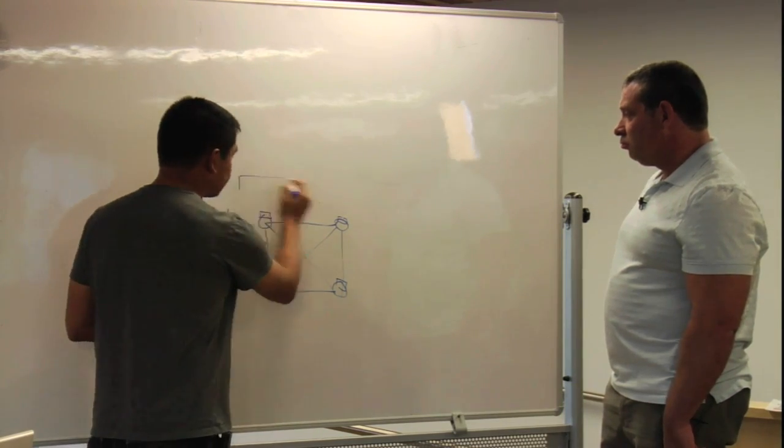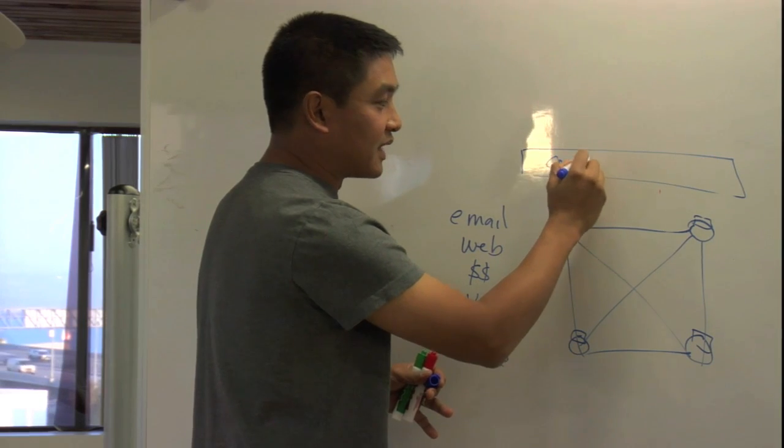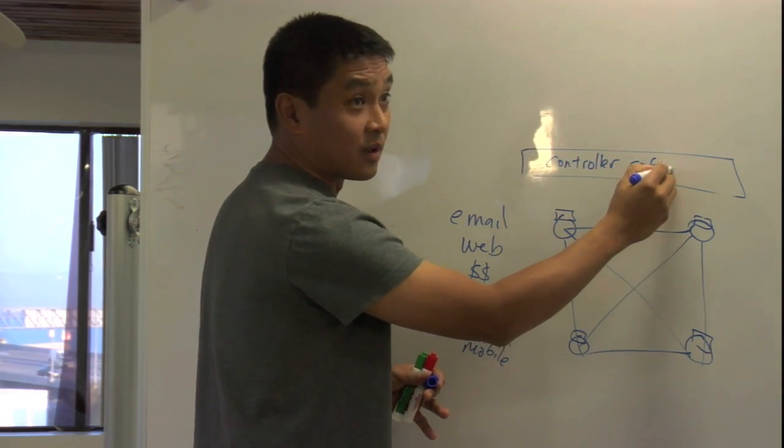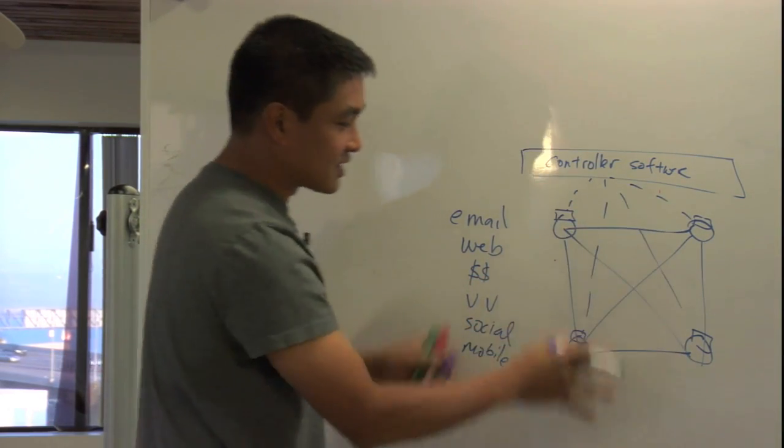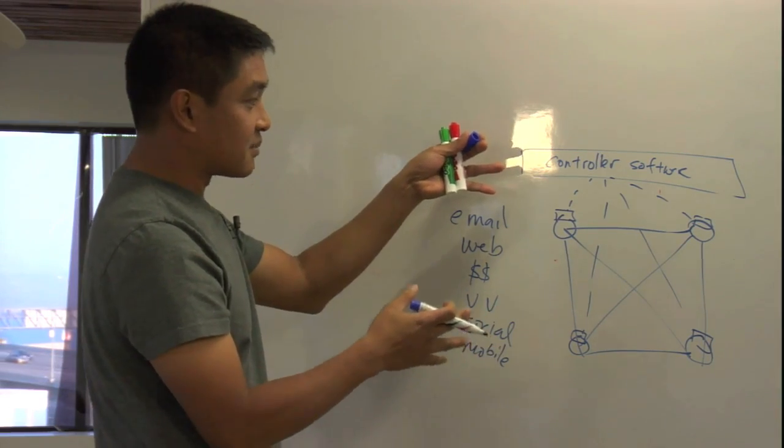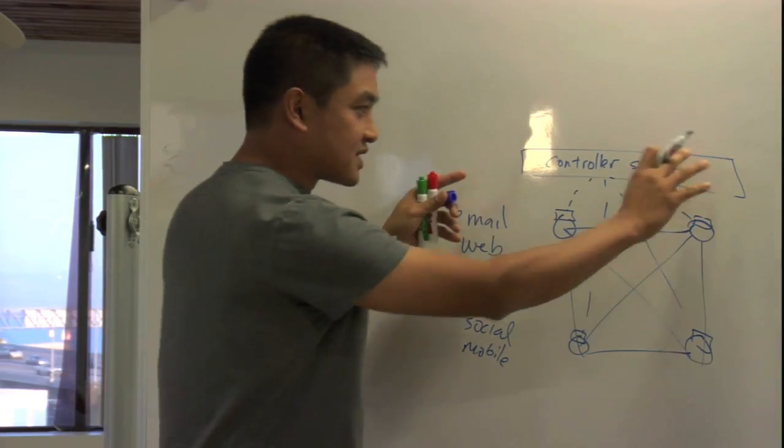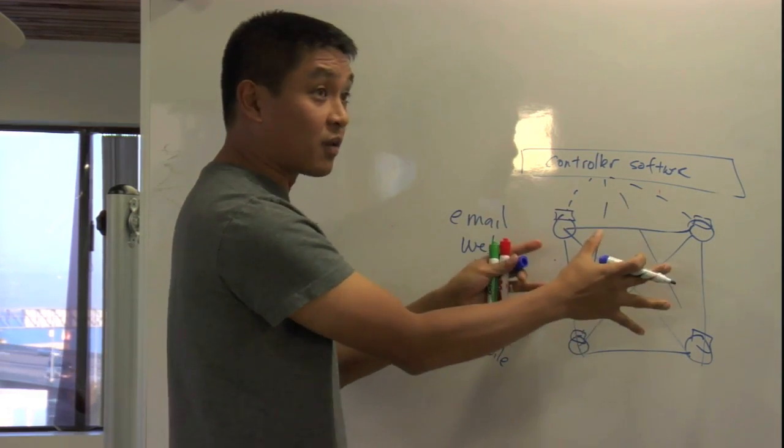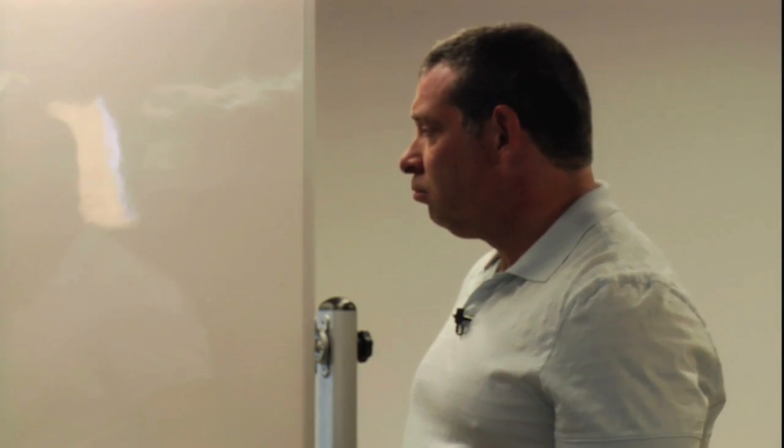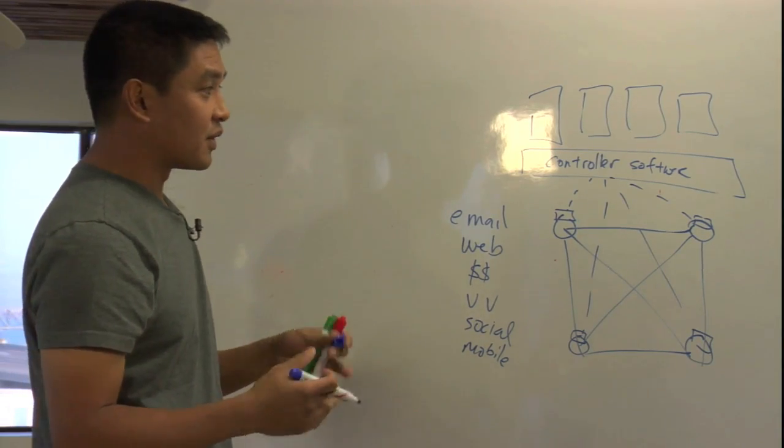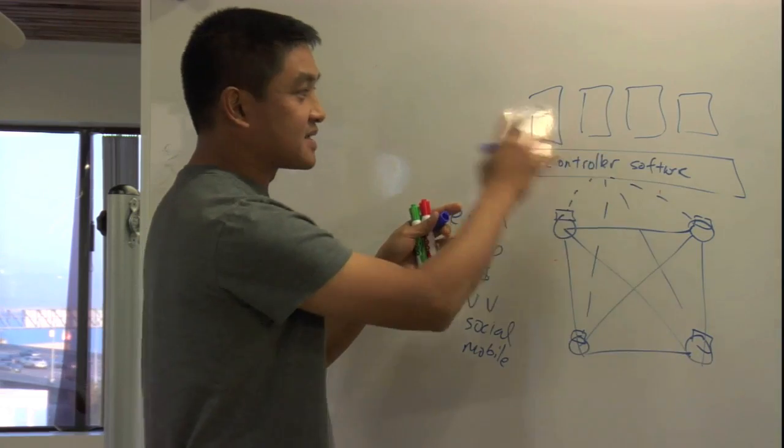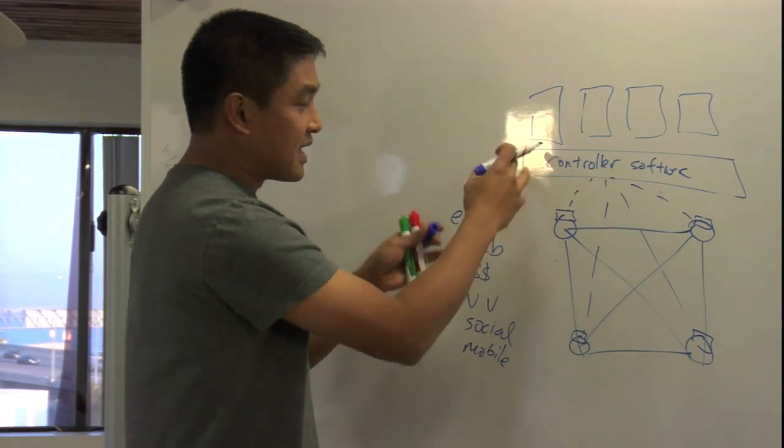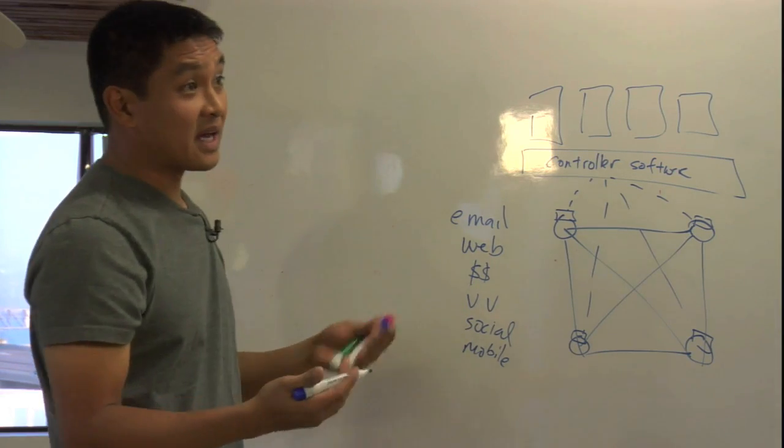Once you have this API, you can have a layer of software above that. We call it a controller. The controller is going to be talking down and pushing instructions in real time down to the network. This is the layer that my company, Big Switch, happens to make. Once you have this layer of software controlling the whole hardware underneath, you can imagine applications being built on top. This is one reason we're so excited about software-defined networking and OpenFlow. It brings this model of layers of programmable hardware and operating system and apps, this horizontalization that we've talked about, to the networking industry, which we've not had until now.